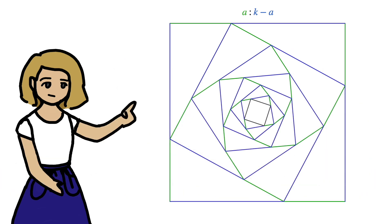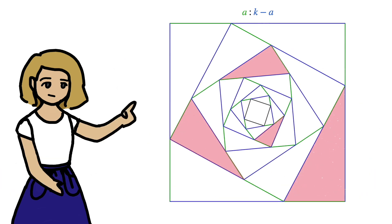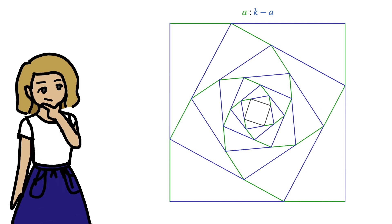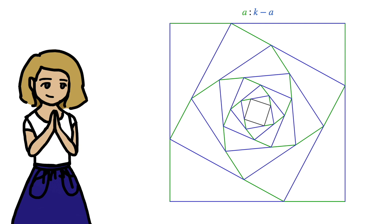This means that our fractal pattern is nice and self-similar, and it also means that all the right triangles are similar as well. Now you'll notice that when we add up the areas of all these triangles, we'll get the area of the square. And with that in mind, we can start looking for our infinite series.